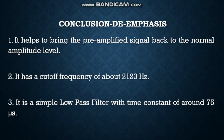De-emphasis circuit helps to bring the pre-amplified signal back to the normal amplitude level. It has a cutoff frequency of about 2123 Hz. It is a simple low-pass filter with time constant of around 75 microseconds. So, we have studied in this lecture about the pre-emphasis and de-emphasis circuits used for threshold effect minimization.